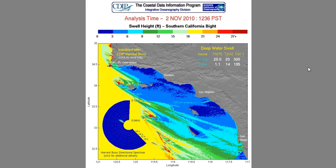That information is transmitted up to a satellite and goes to a computer, which every three hours generates what's called a wave model — a map predicting how big the waves are going to be in different places based on the swells approaching the buoy. The first thing to notice when you look at a wave model is this box here, which shows us that on this particular day we have a deep water swell from the North Pacific with a height of 20 feet and a period of 20 seconds coming from a direction of 300.